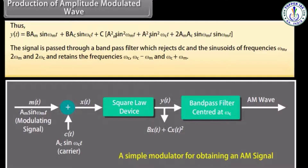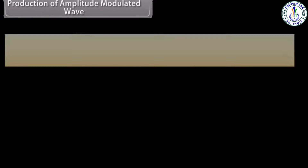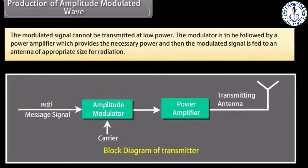The output of the band pass filter is an AM wave. The modulated signal cannot be transmitted at low power, so the modulator is followed by a power amplifier which provides the necessary power. The modulated signal is then fed to an antenna of appropriate size for radiation.